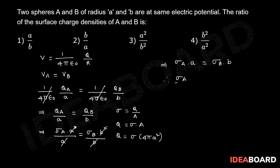Finally, sigma A by sigma B is equal to B by A. So second option is the right option. Thank you.